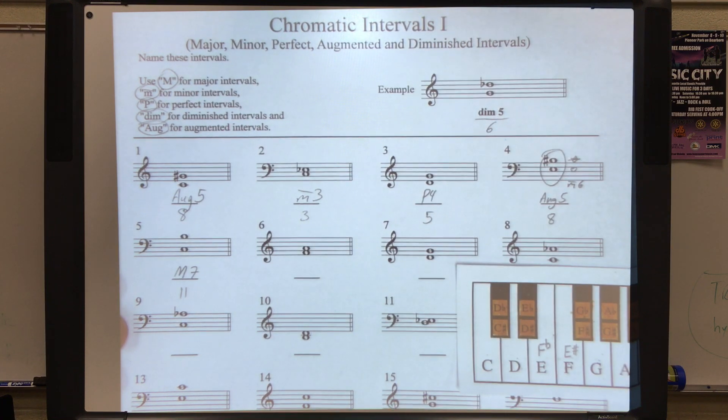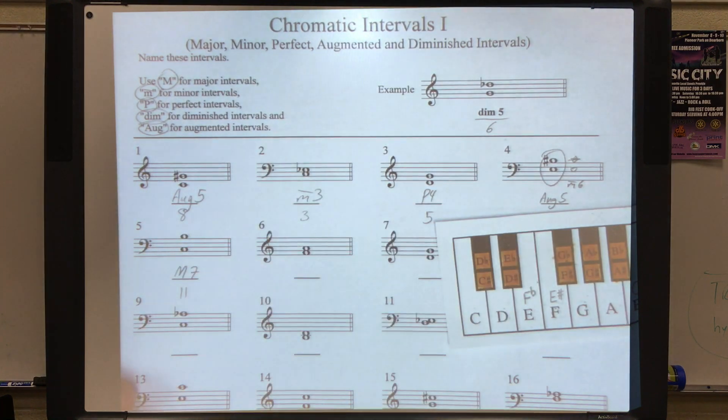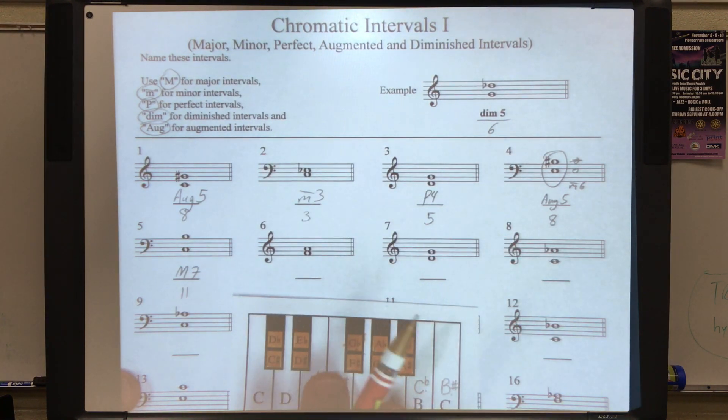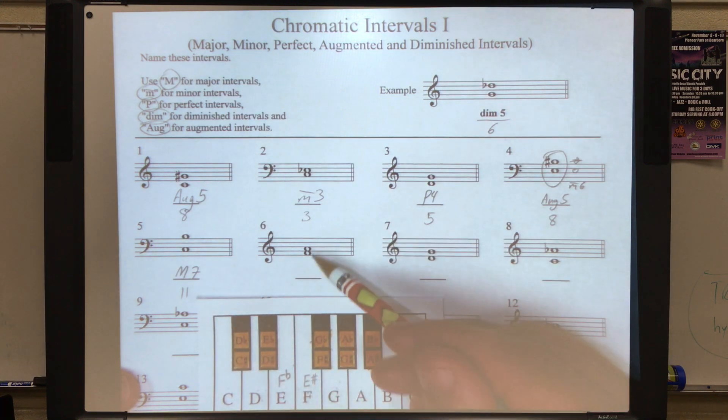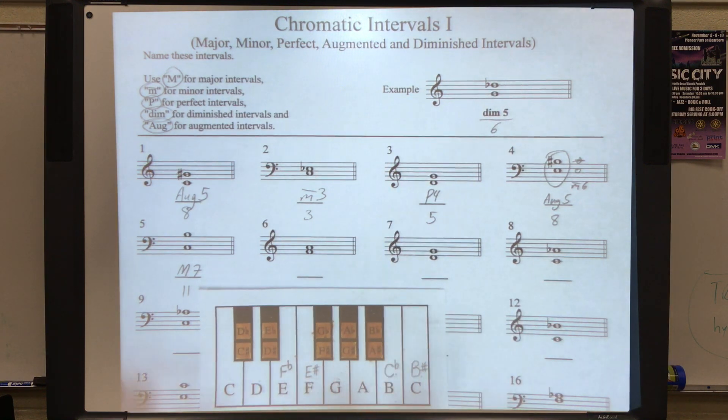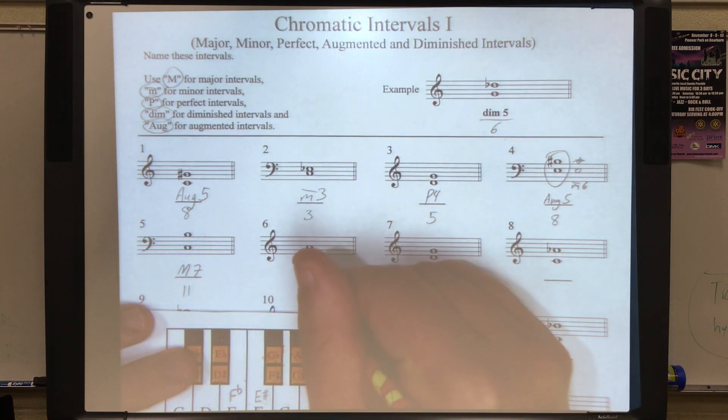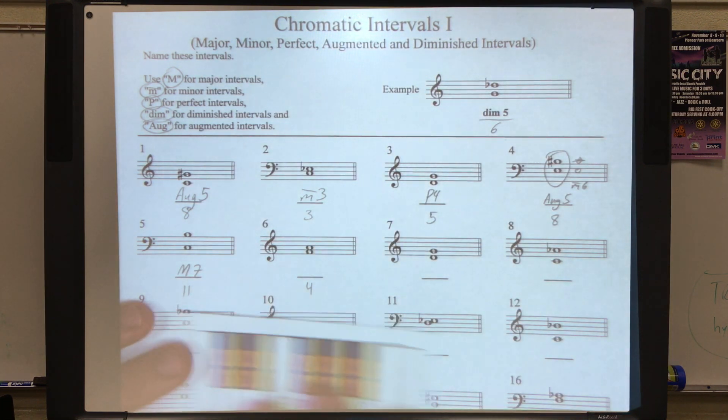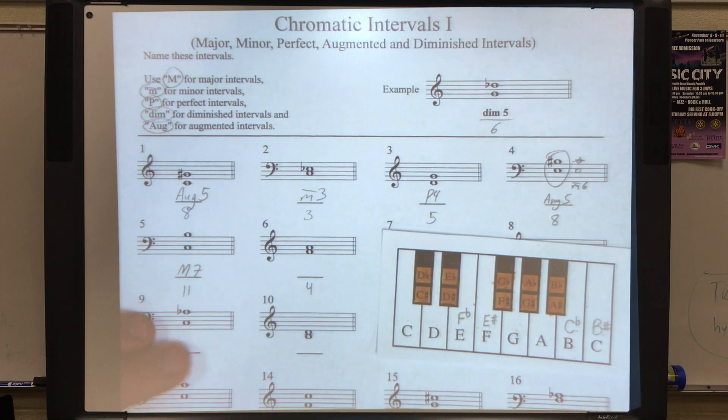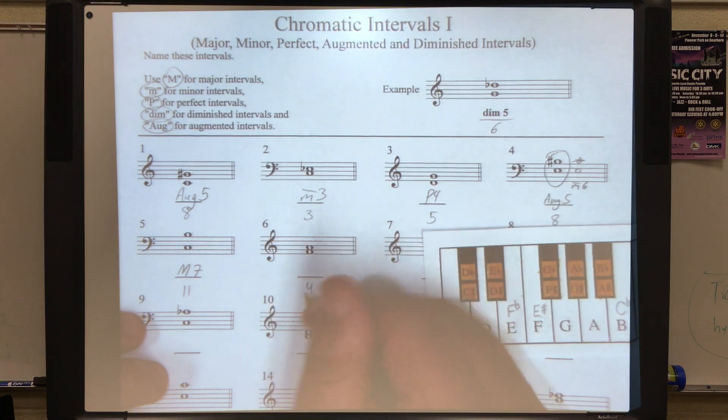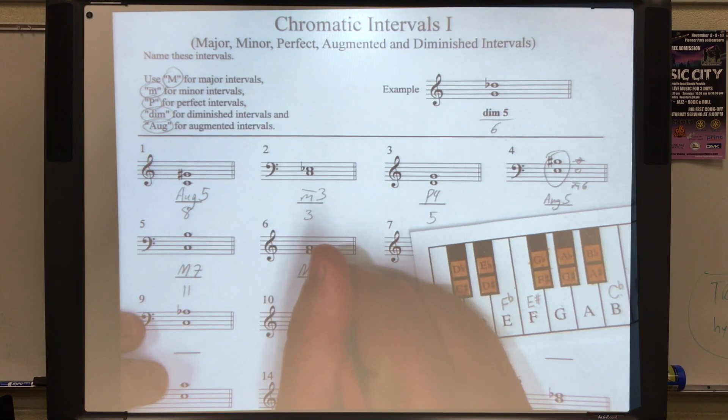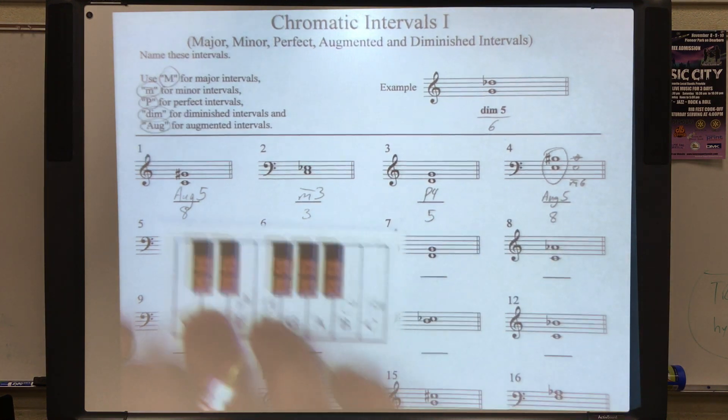Number six, and I will play the rest of them from here on out. We've got an F to an A. So let's go on our keyboard, F to an A. F is zero, one, two, three, four. Four half steps. Then we can look at our chart, and we notice that four half steps is a major third.